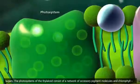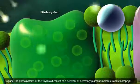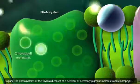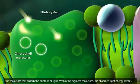The photosystems of the thylakoid consist of a network of accessory pigment molecules and chlorophyll, the molecules that absorb the photons of light.